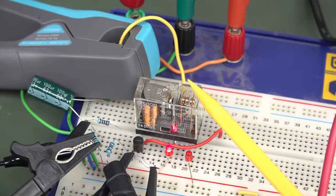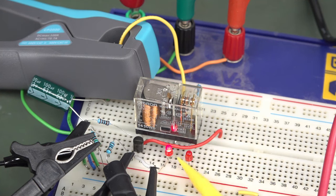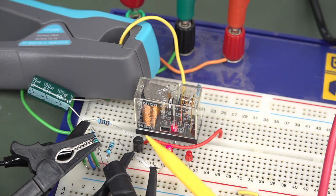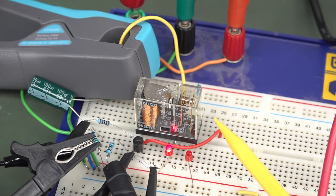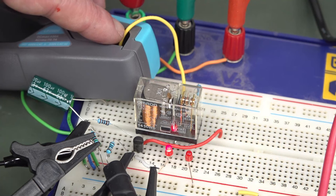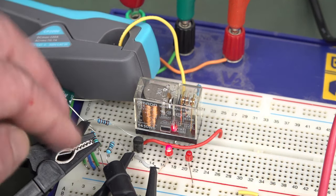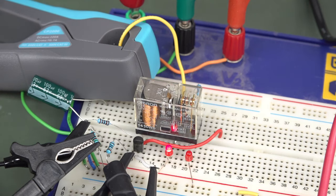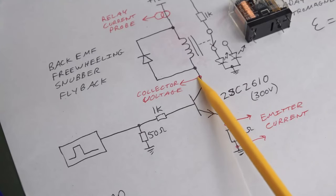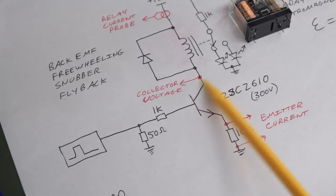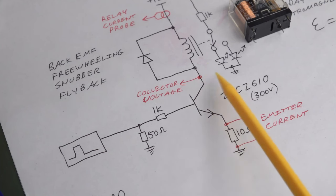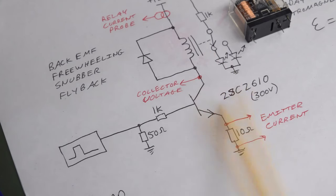Here's the circuit with the OMRON relay. The relay is switching back and forth — that's the switching transistor. There's no freewheeling back EMF diode in there at the moment. There are probes measuring current and voltages, and another probe going to the collector voltage, because that's what we're really concerned about today — what happens to the voltage at that point, and will we blow up our driver transistor?